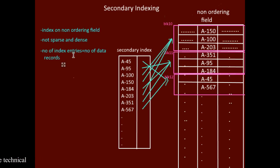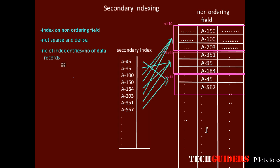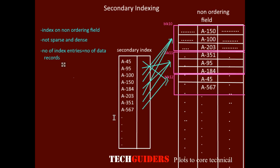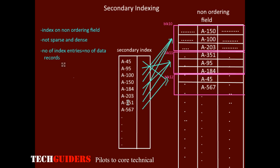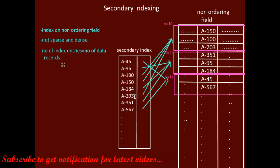The secondary index acts as a secondary access method, and we can have any number of secondary indexes on a file. The number of index entries in the secondary index equals the number of data records, since every record has a corresponding entry. So the size of the secondary index will be large compared to the primary or clustered index.